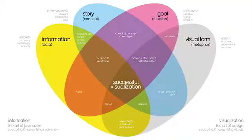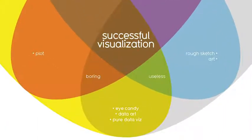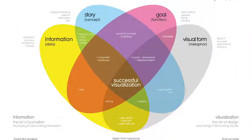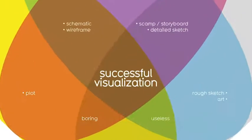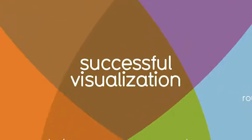Even using three elements gets you closer, but you're not quite finished. For example, if you combined information, goal, and visual form without any story, your visual will probably look fine, but it won't be interesting. On their own, each element has value, but visualizations only become truly powerful and effective when you combine all four elements in a way that makes sense. And when you think about all these elements together, you can create something meaningful for your audience.